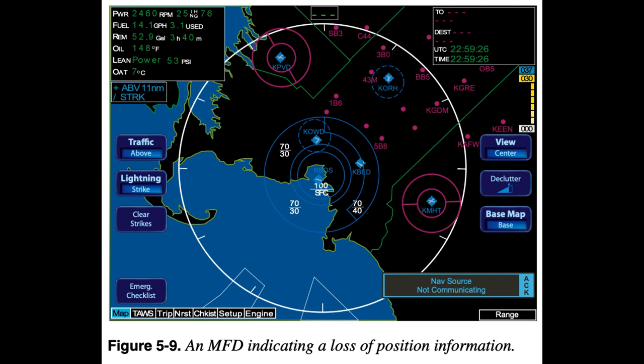The Moving Map is not required to meet any certification standards for accuracy or information as are the primary navigation CDI and related system components. Bear in mind that the apparent accuracy of the Moving Map display can be affected by factors as simple as the range setting of the display. An aircraft 10 miles off course can appear to be centered on an airway when the range is set to cover great distances.